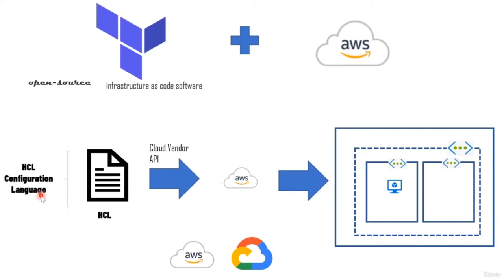Hi, let's start this section by talking about Terraform. Terraform is basically an open source software that is generally used to create infrastructure. It's widely used across most cloud providers and has become a sort of standard for creating infrastructure in the cloud — including Azure, GCP, and AWS.